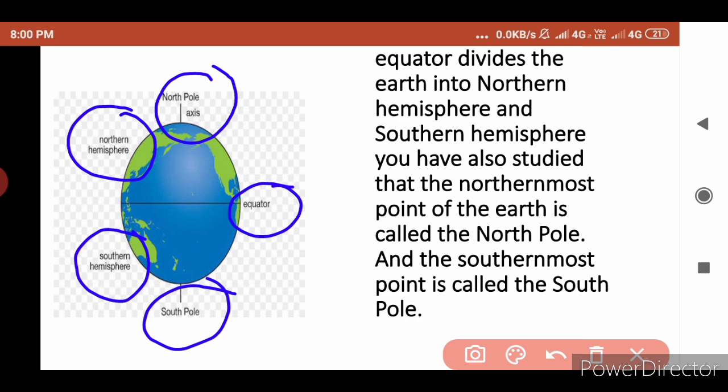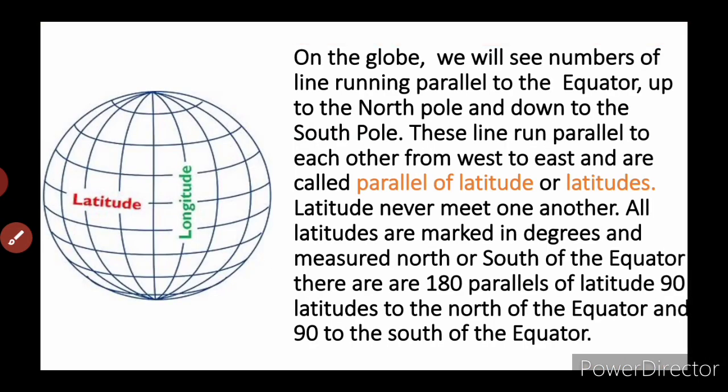On the globe, we will see numbers of lines running parallel to the equator, up to the north pole and down to the south pole. These lines run parallel to each other from west to east, and they are called parallels of latitude, or latitudes. Latitudes never meet one another.